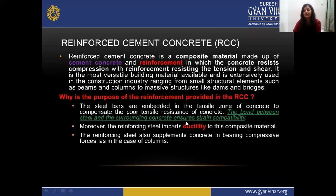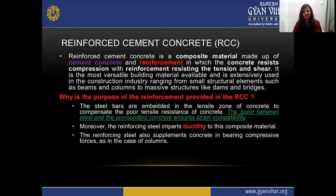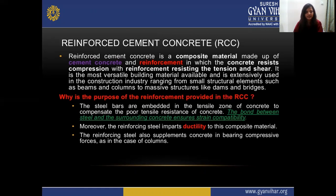Reinforced concrete is a composite material made up of cement concrete and reinforcement — steel bars — in which the concrete resists compression while reinforcement resists tension and shear. Concrete performs very well under compressive load but fails under tensile and shear loads. By adding steel bar reinforcements, it performs very well under tension and shear, giving an all-round effect. This is the most versatile building material, extensively used from small structures like beams and columns to massive structures such as dams and bridges.